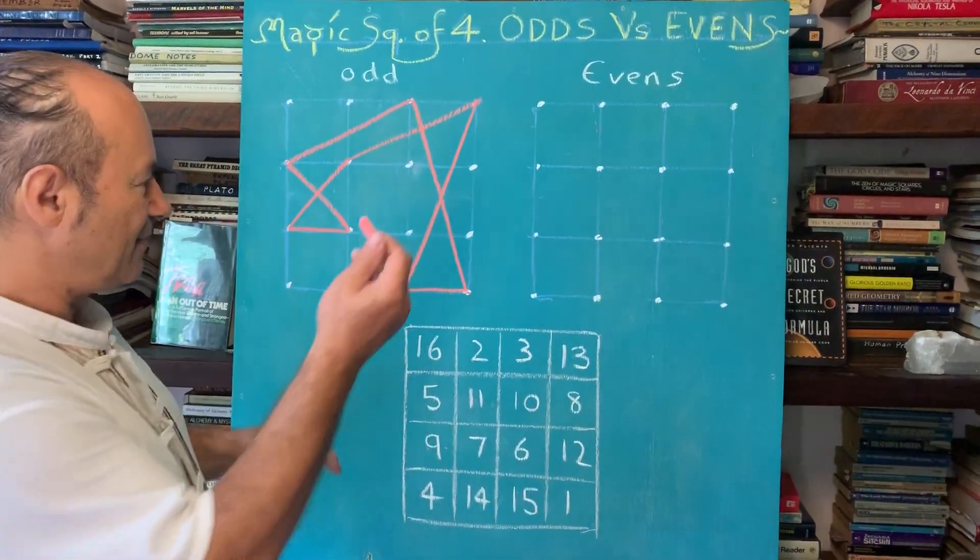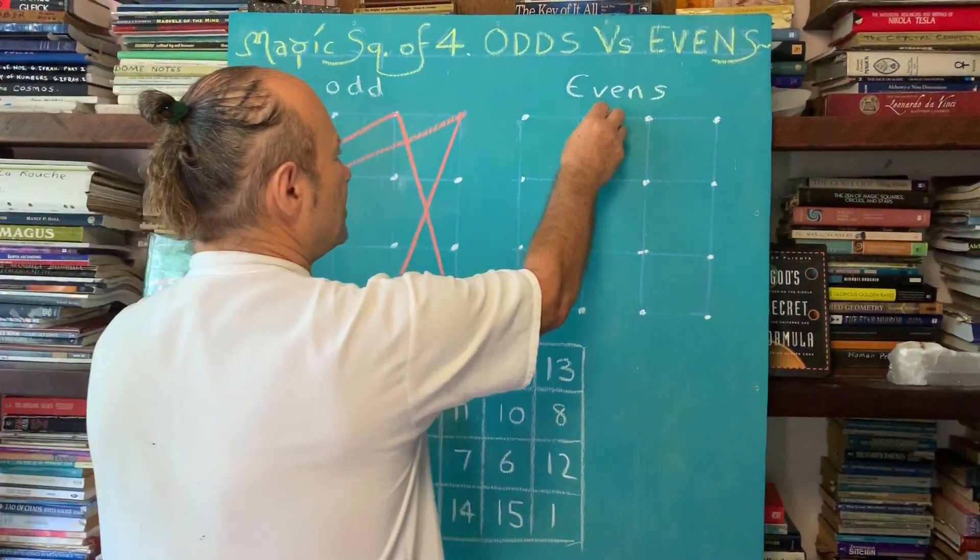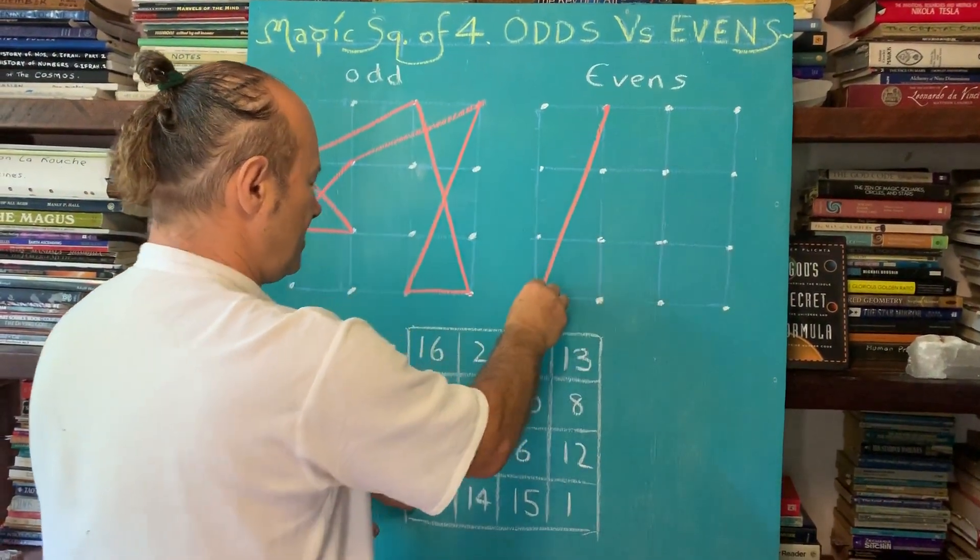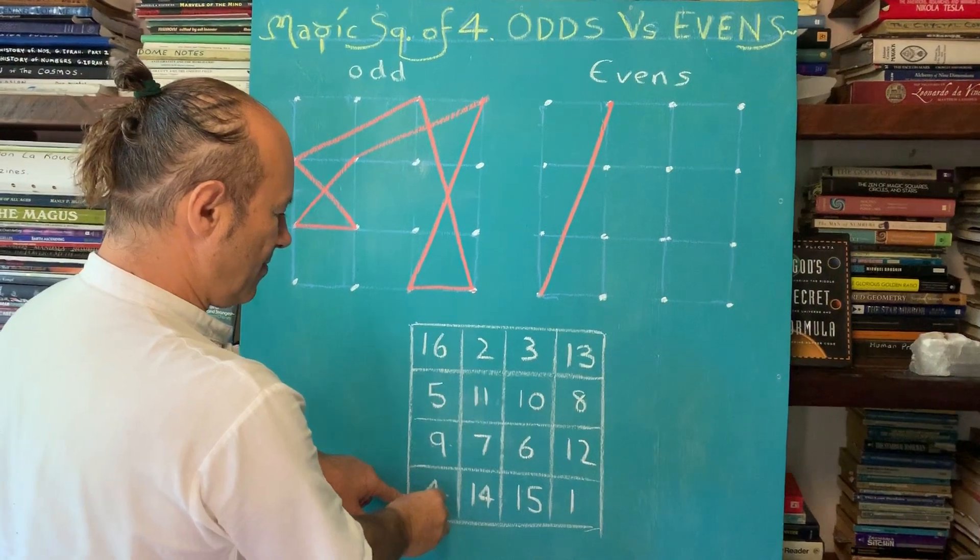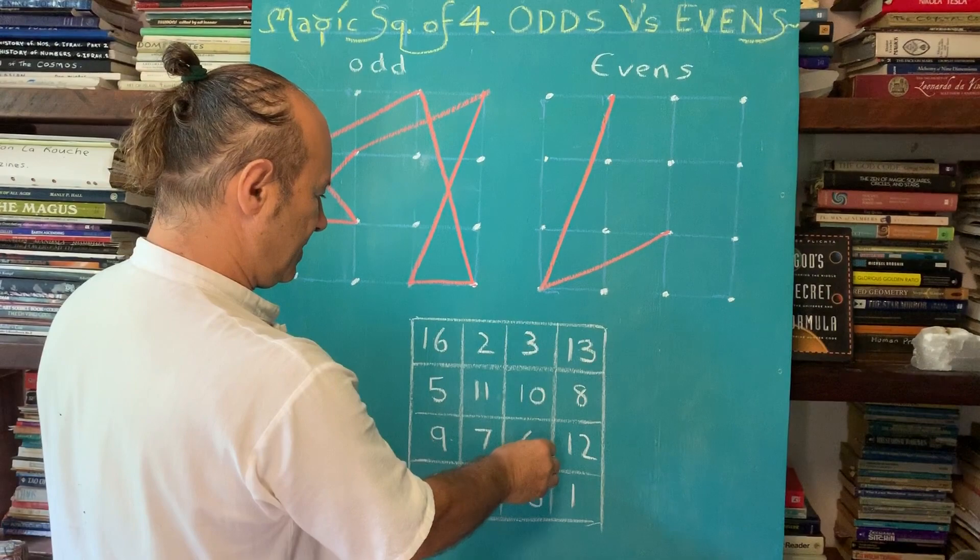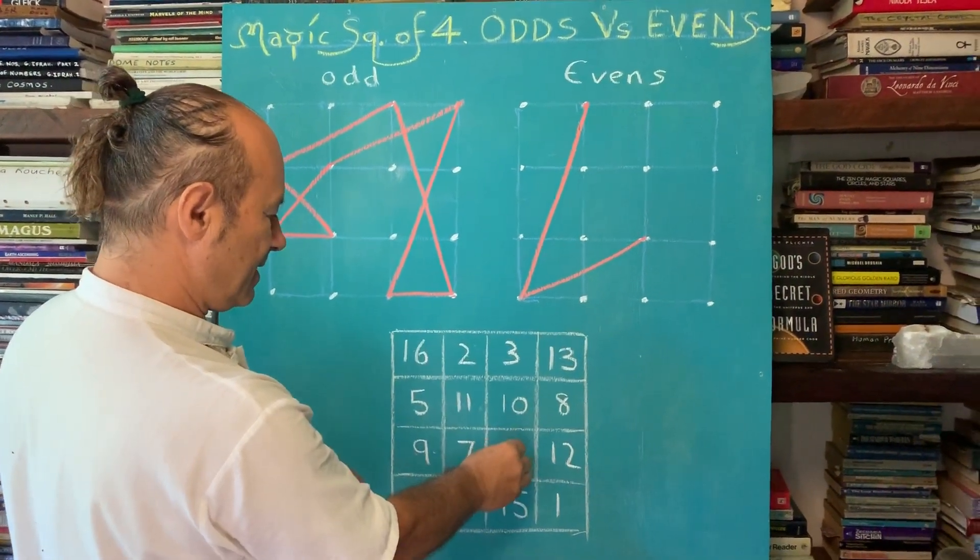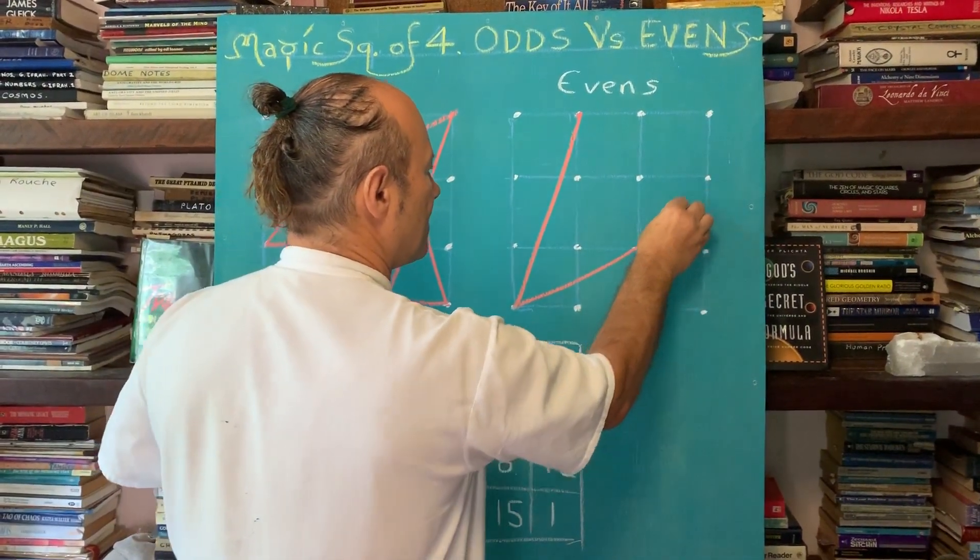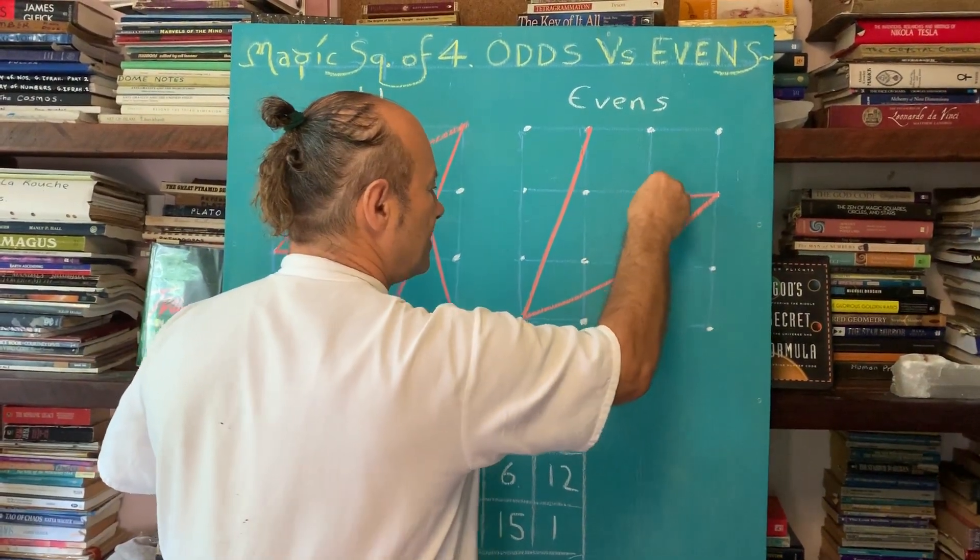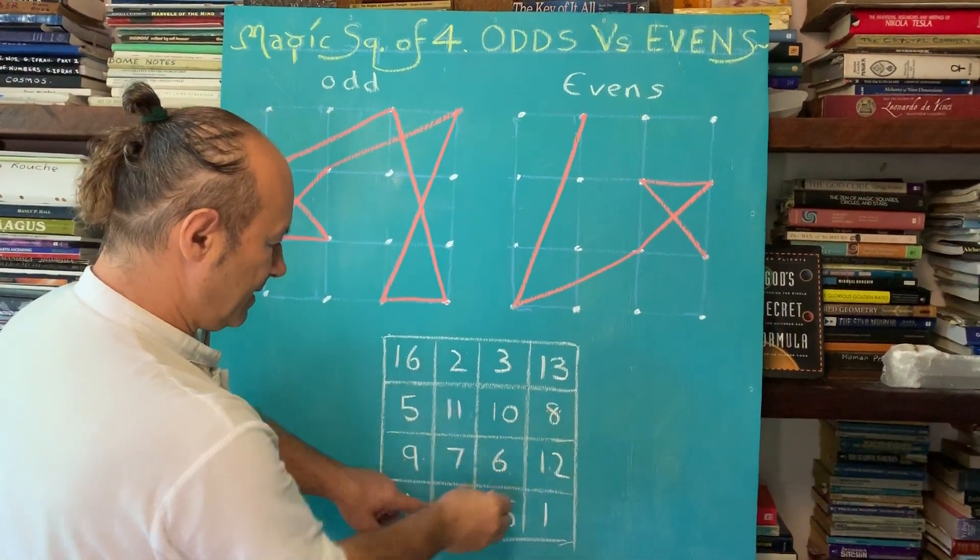But we'll see what happens with the evens. I'll use the same color. So we're going to start with 2, and 4 is in the corner here. So I'm going to go straight down to 4. So we're going 2, 4, 6 is over here. 2, 4, 6, 8. Now 8 just jumps up. And 10 is across and 12, so I can go straight 10, 12. 14 is straight down here.